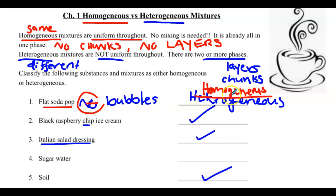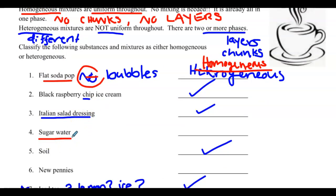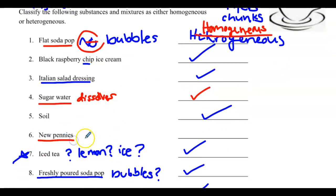So flat soda pop. There's no bubbles. It's homogeneous. Sugar water. In geology we make some geodes this way. But if you stir up all that sugar until it dissolves, it's going to be uniform. You could get to a point where you put so much sugar in that it won't dissolve anymore and then it would become heterogeneous. Now new pennies. Technically these are an alloy. They're not solid copper. They're a mixture of zinc and copper.